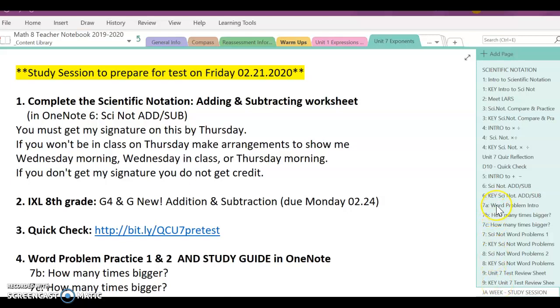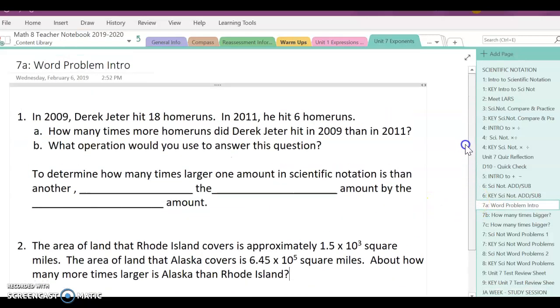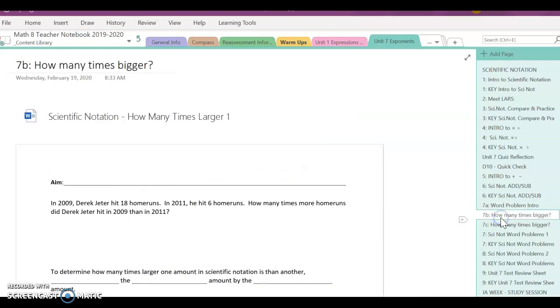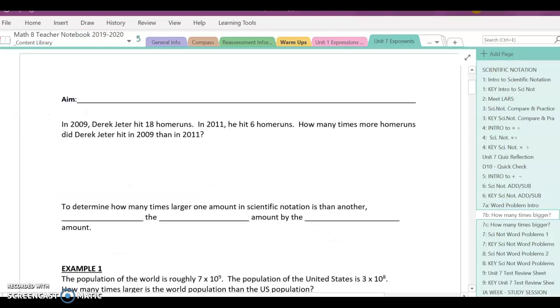I went ahead and added in a couple more problems. This word problem 7a is actually if you were in class with me, we're doing it as a warm-up. What I wanted to do was actually talk about in 7b. So it builds off of 7a. Let's take a look at this right now. The opening question here is really just asking, he hit 18 home runs in 2009. In 2011 he hit 6 home runs. How many times more?